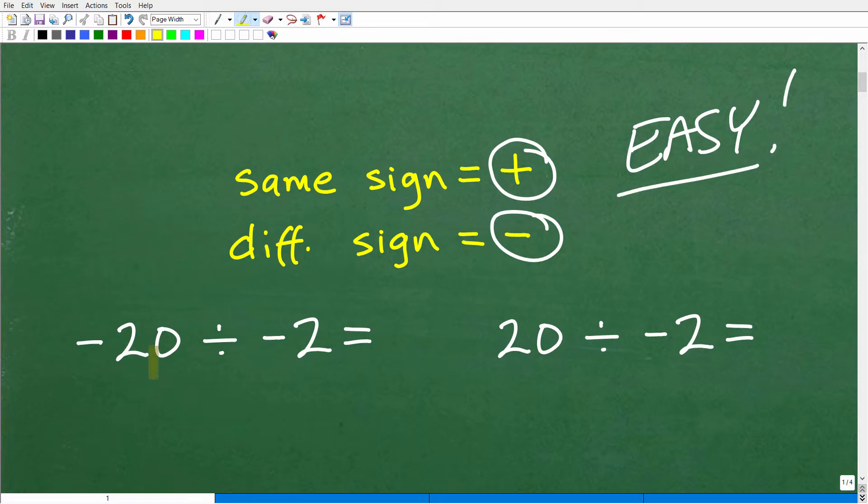All right, so let's take a look at this problem. I have negative 20 divided by negative 2. So, what are the signs? Always focus in on the signs here. So, this is a negative, and this is a negative. Are the signs the same or different? Well, they are the same. That's 2 negatives. So, same sign, so the answer is positive. So, 20 divided by 2 is 10.